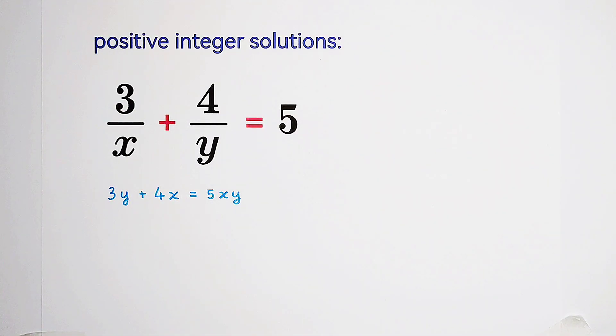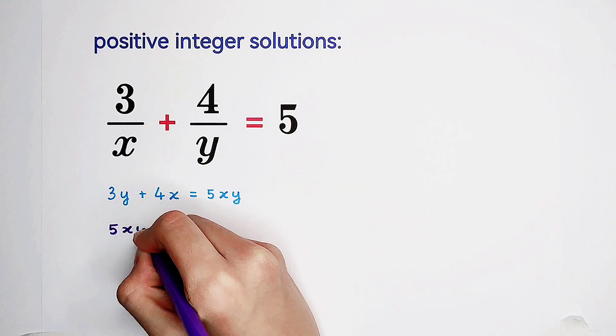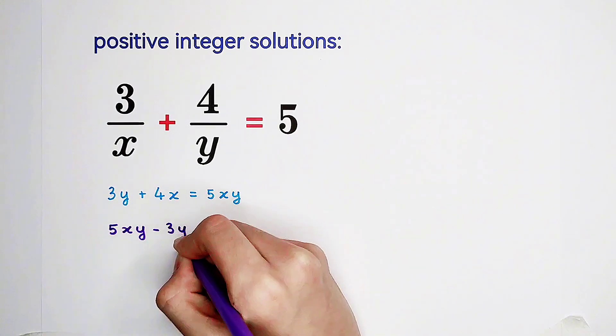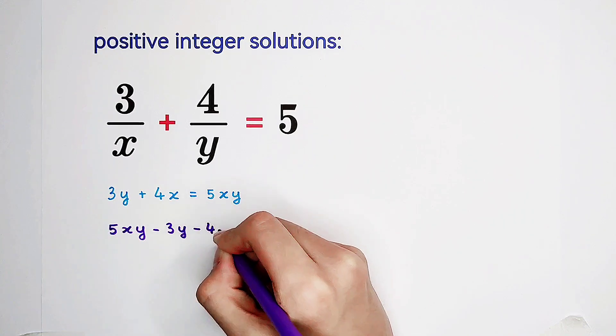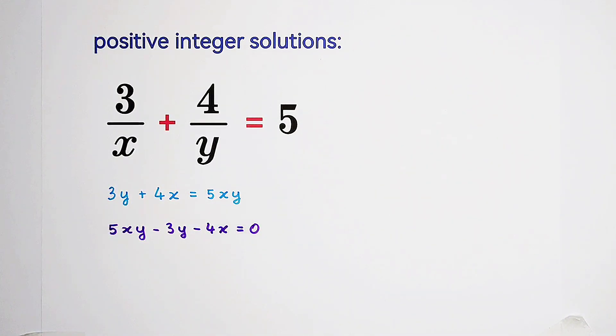Now we can subtract the left hand side from the right hand side. 5 times xy minus 3y minus 4x equals 0. Very good.